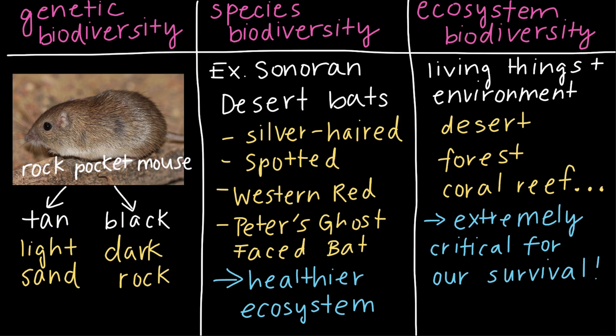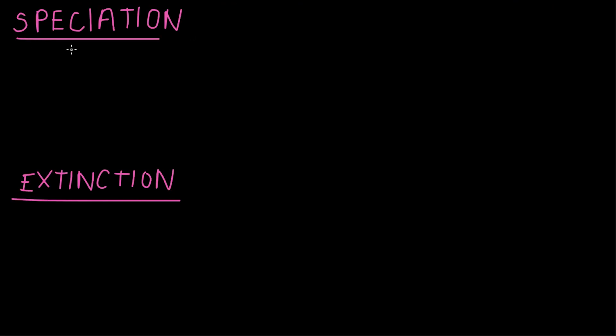Now, biodiversity doesn't remain constant. So we can think of biodiversity as something that can change over time. Now, the important thing to remember is that speciation increases biodiversity, while extinction decreases biodiversity.